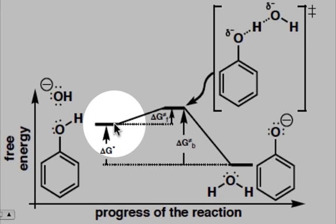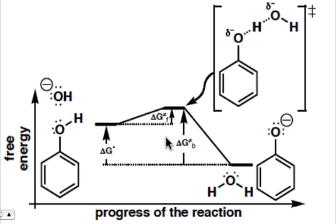However, there's more energy that's required to go from our products to our reactants. This delta G double dagger B is much larger than our delta G double dagger F. This backwards reaction takes more energy to occur, so therefore it will occur much more slowly and also much less frequently.